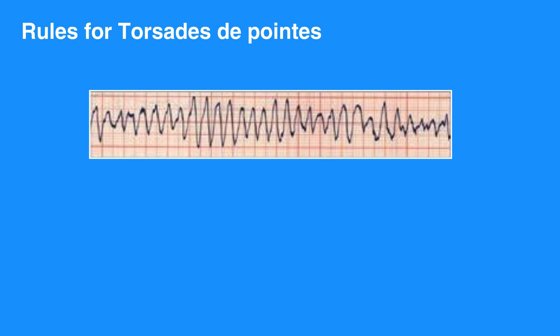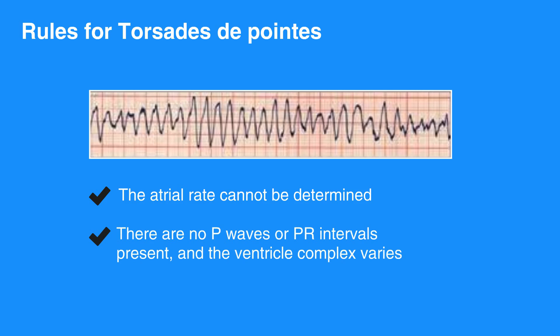The rules for Torsades de Pointes, which is irregular wide complex tachycardia, include no regularity. The atrial rate cannot be determined. The ventricular rate is usually between 150 and 250 beats per minute. There are no P waves or PR intervals present, and the ventricular complex varies.